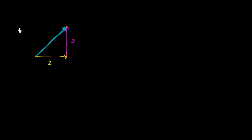So for example, in the horizontal direction, you would have to go this distance. And then in the vertical direction, you would have to go this distance — let me do that in a different color — you would have to go this distance right over here. So let's just say that this distance is 2, and that this distance is 3.